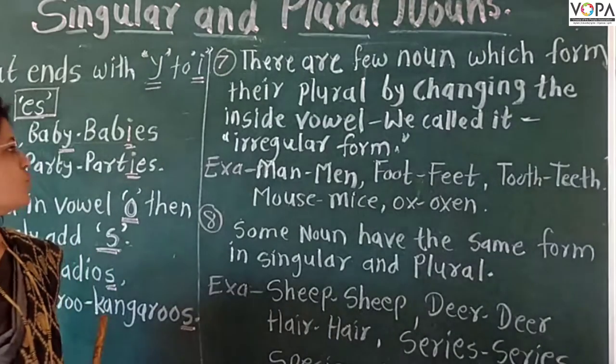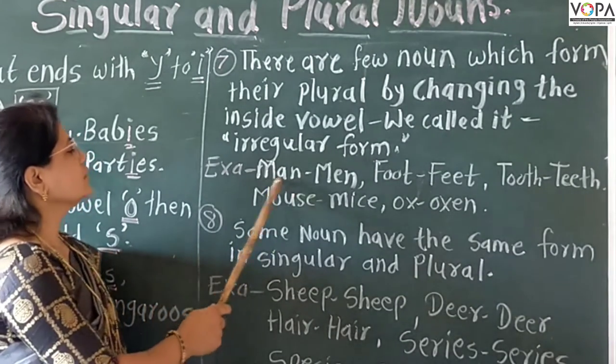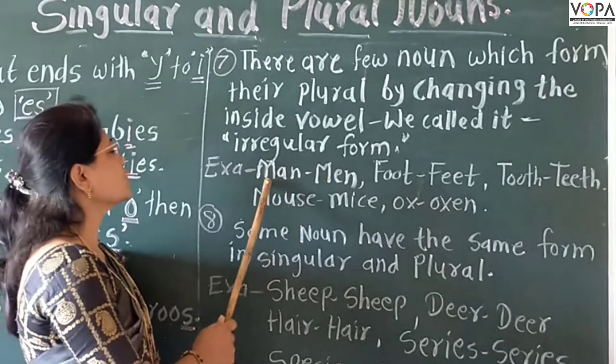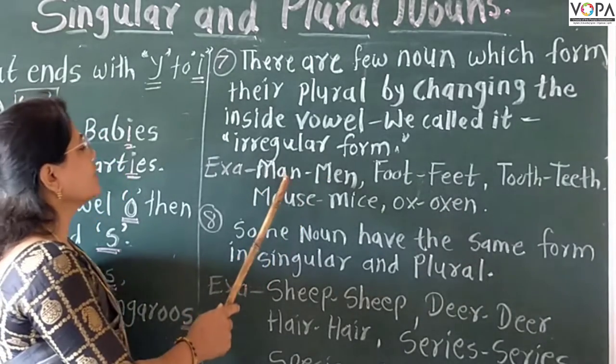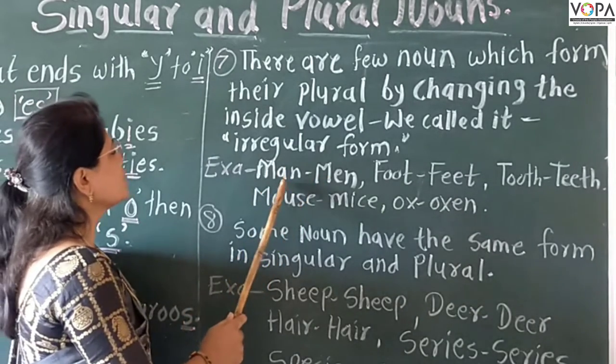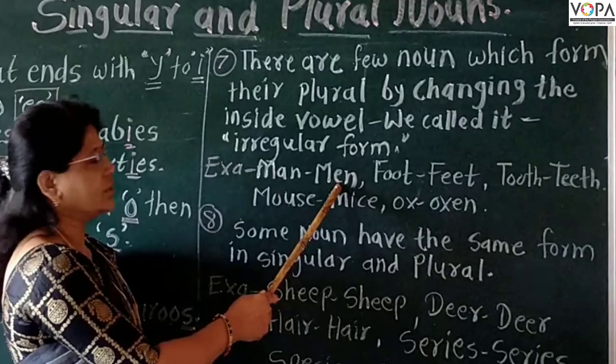For example: man becomes men. In the spelling of man, we change the vowel a into e to make the plural form.